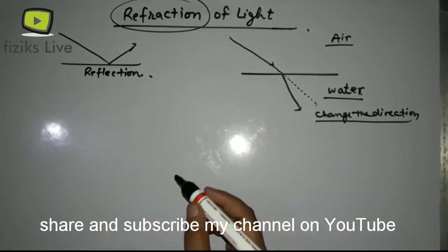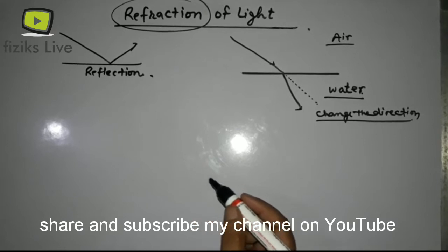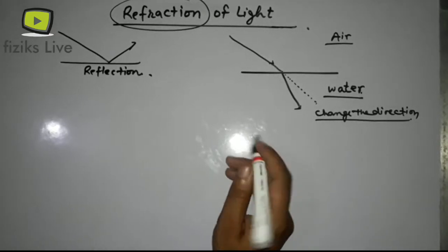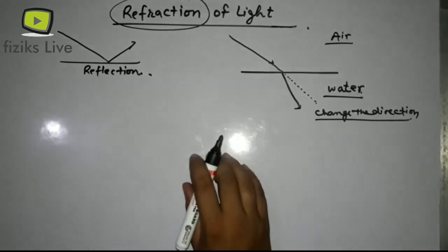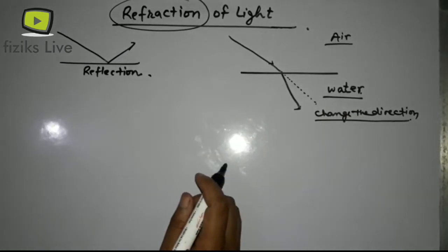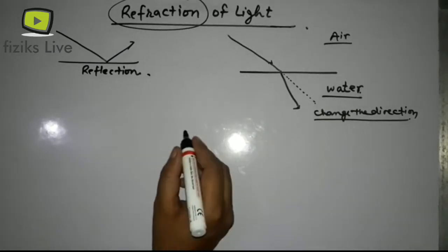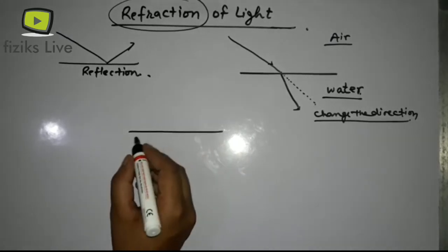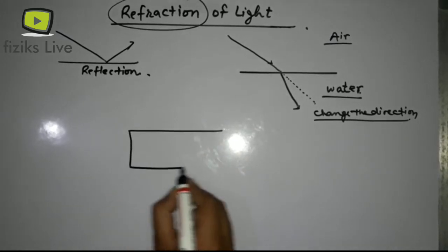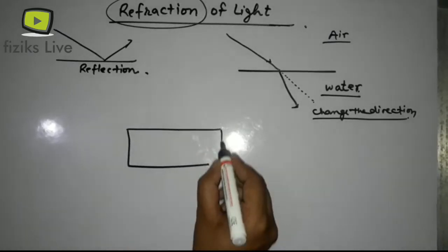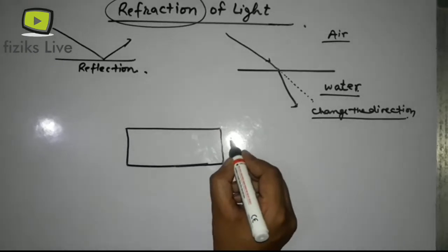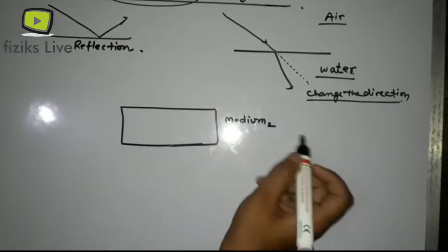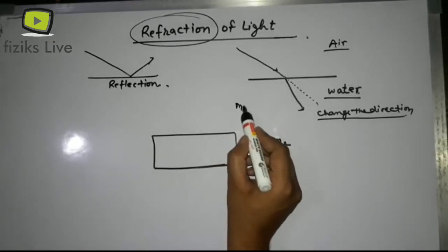Just as in our previous chapter on reflection we studied the angle of reflection and angle of incidence, we will study similar concepts in this chapter. Now consider: this is medium 1, which is air, and this is medium 2, which is water.